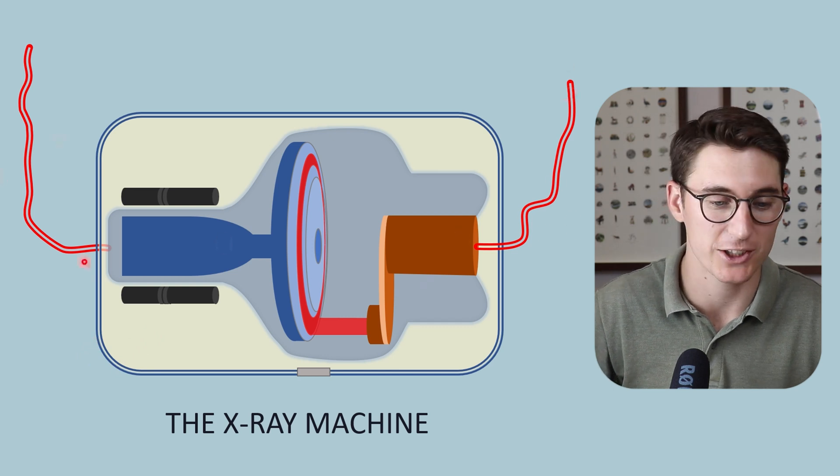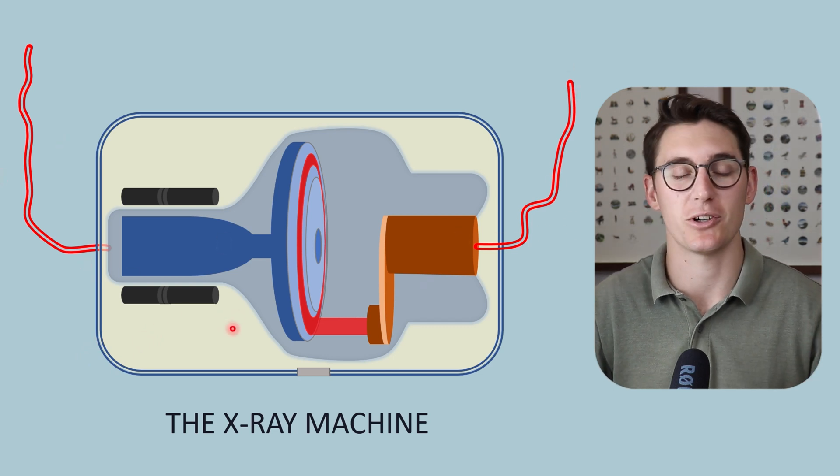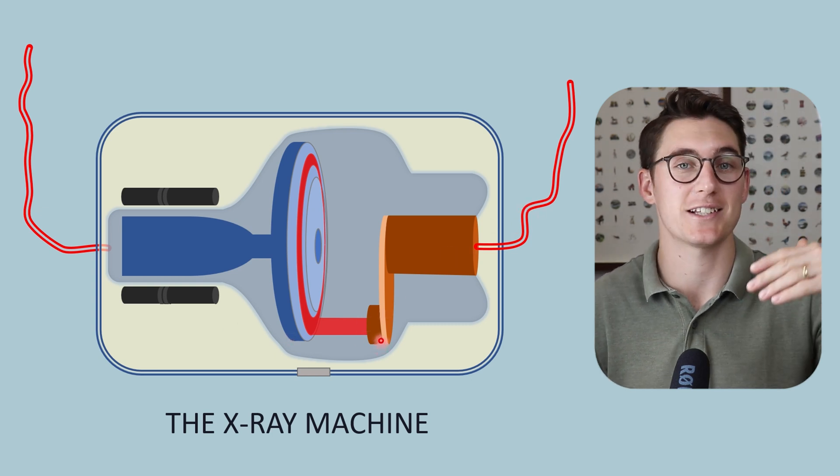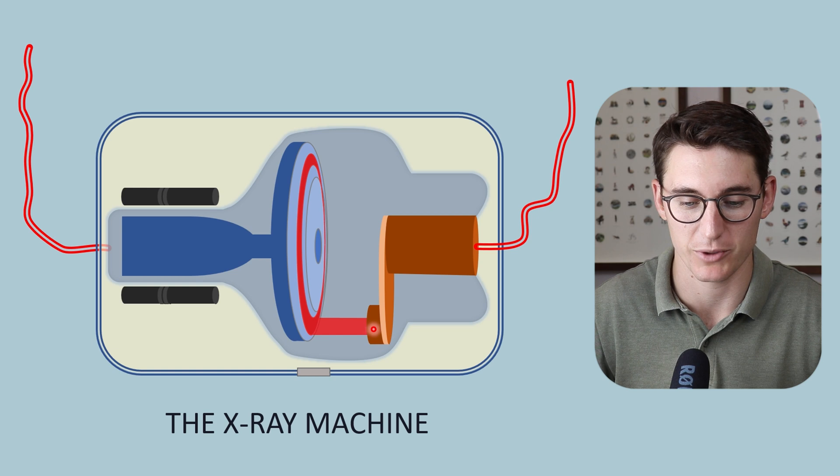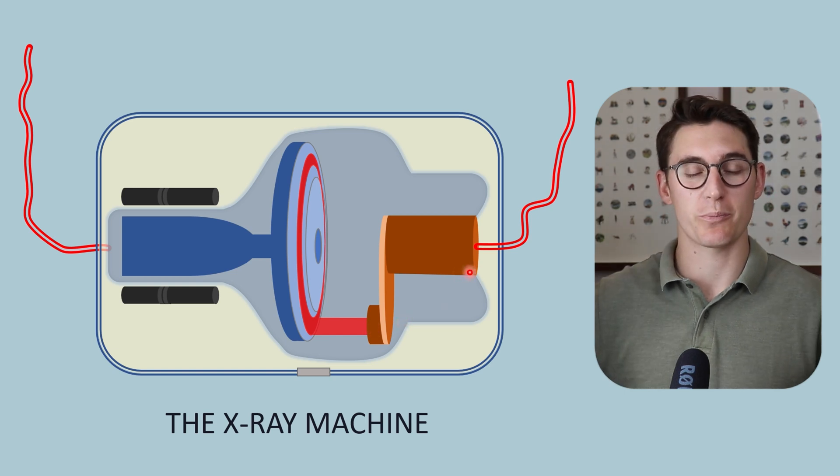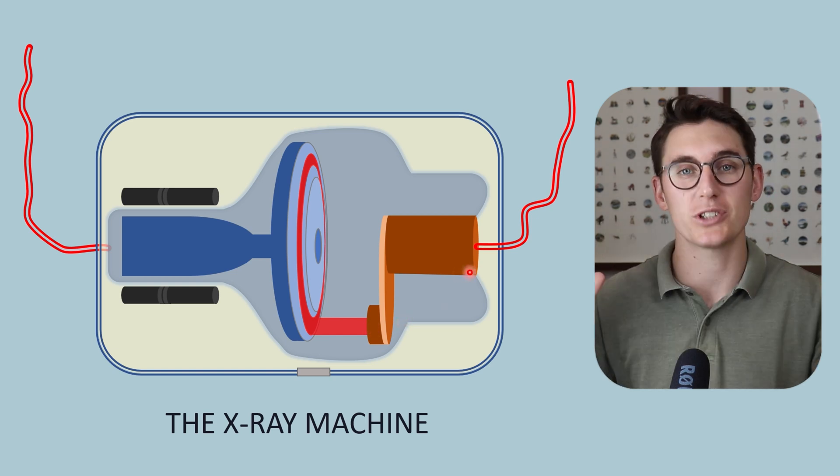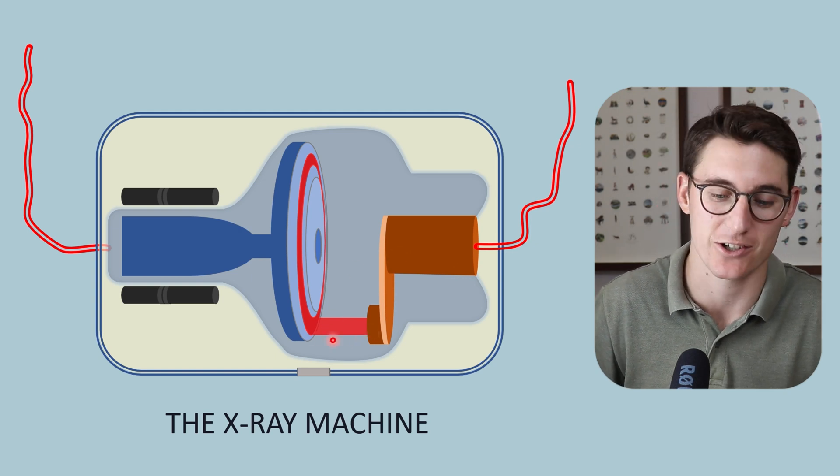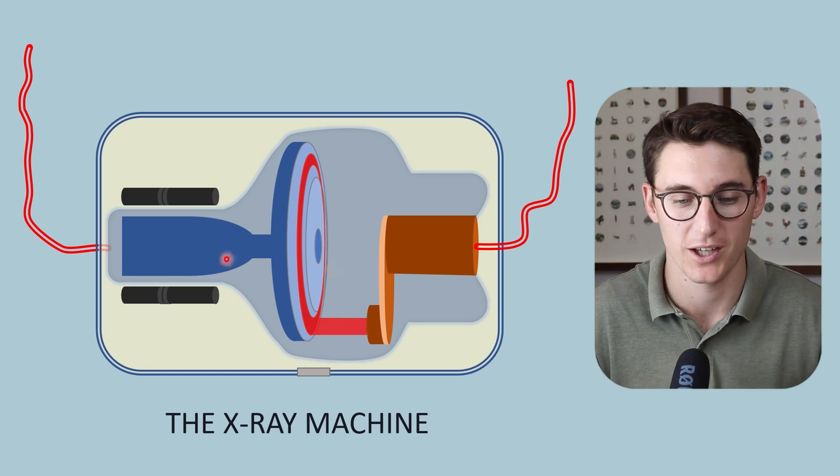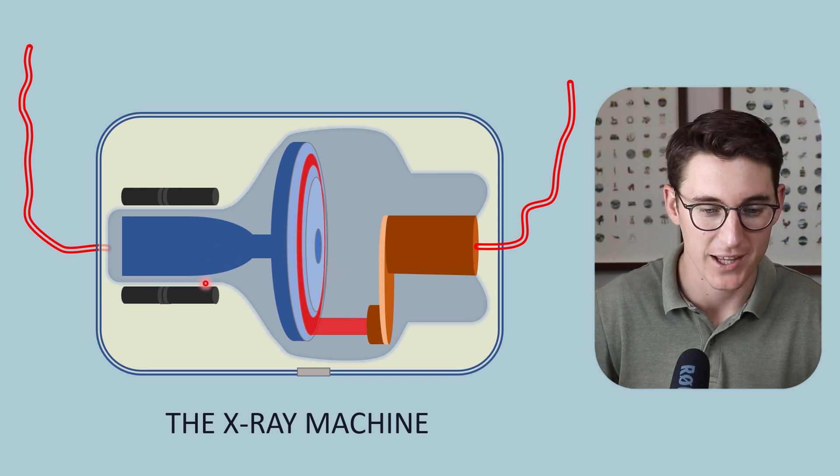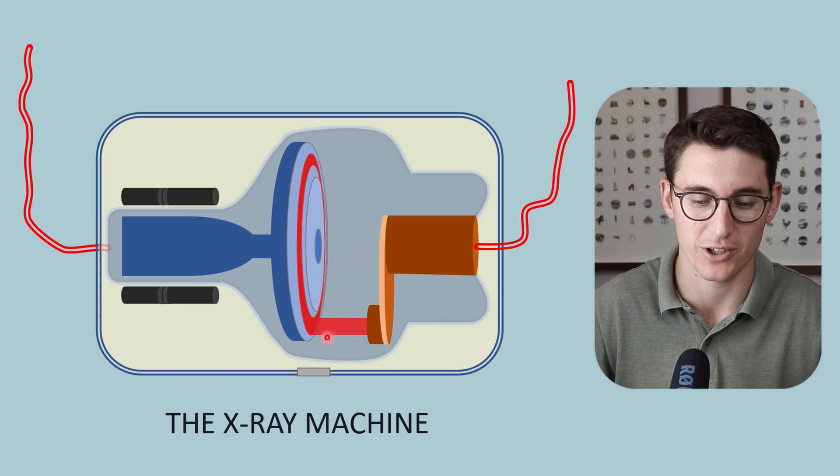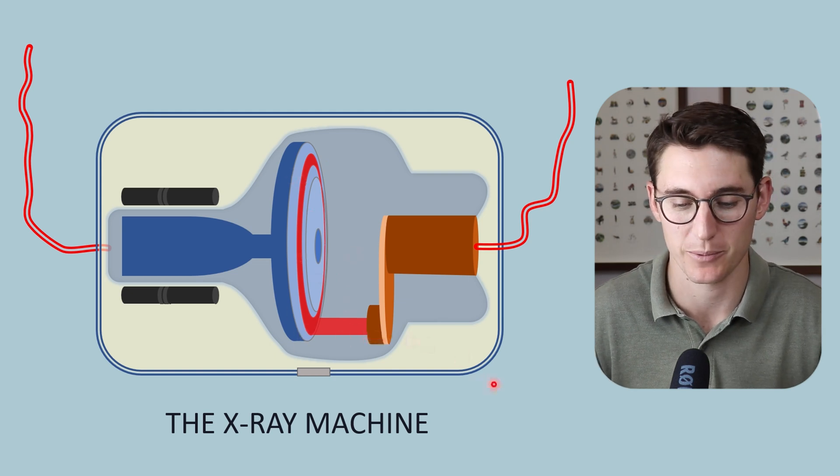We then have power supply to our x-ray machine that has multiple functions. First, we run current through our filament and create electrons through the process of thermionic emission. Secondly, we want to provide a tube potential, a voltage difference between our cathode and our anode that accelerates those electrons towards our anode. We also have a power supply that goes to these stator motors that controls the rotation of the anode, that allows the anode to deal with all that heat buildup.